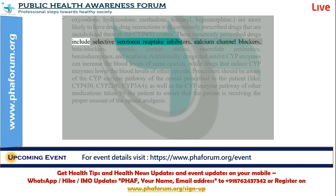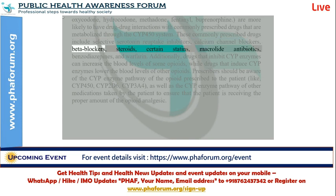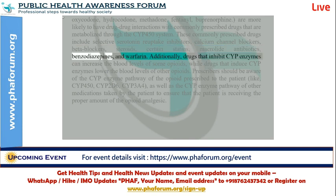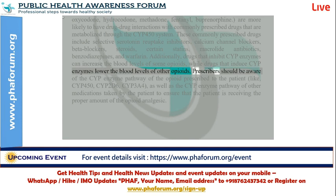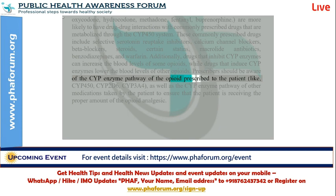These commonly prescribed drugs include selective serotonin reuptake inhibitors, calcium channel blockers, beta blockers, steroids, certain statins, macrolide antibiotics, benzodiazepines, and warfarin. Additionally, drugs that inhibit CYP enzymes can increase the blood levels of some opioids, while drugs that induce CYP enzymes lower the blood levels of other opioids. Prescribers should be aware of the CYP enzyme pathway of the opioid prescribed — like CYP450, CYP2D6, CYP3A4 — as well as other medications taken by the patient.